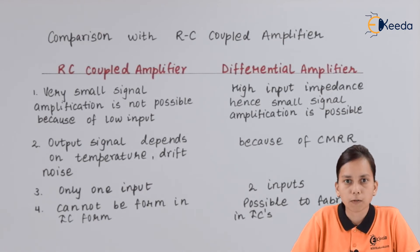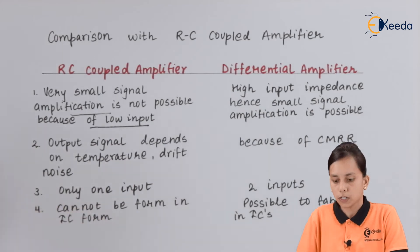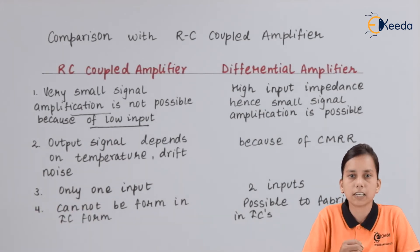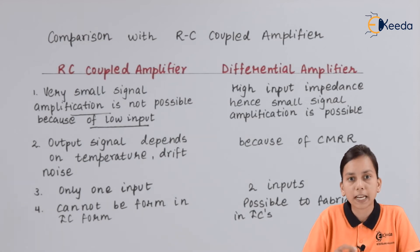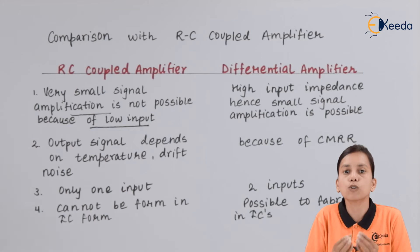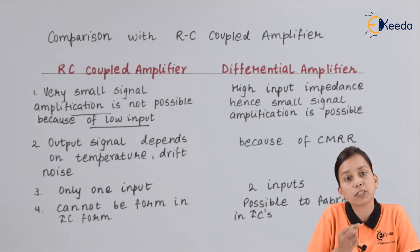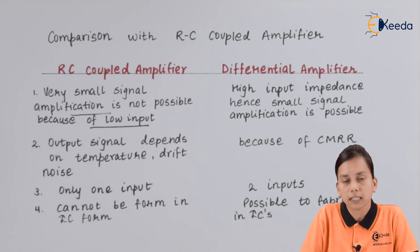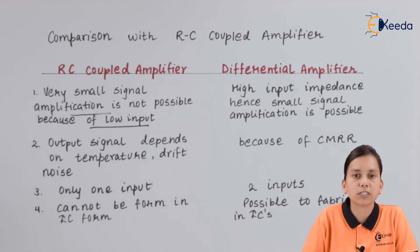Let us compare the points one by one. First point: very small signal amplification is not possible in RC coupled amplifier because of low input impedance. If any input of very low amplitude is applied to the RC coupled amplifier, it is not able to amplify that signal. But if we compare to op-amp, the op-amp is capable of amplifying such small amplitude signals also. That's why op-amp plays a significant role in amplifying low voltage or low amplitude signals.